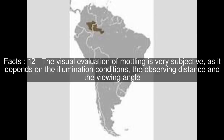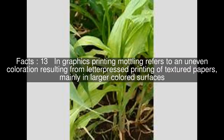In graphics printing, mottling refers to an uneven coloration resulting from letter-pressed printing of textured papers, mainly in larger colored surfaces. Due to the uneven surface, not all fibers of the paper are evenly saturated with color, unlike offset printing.